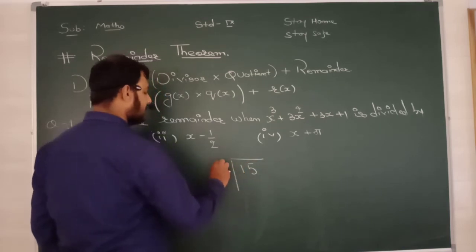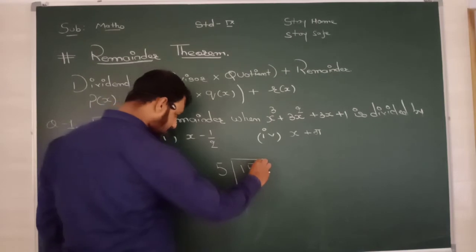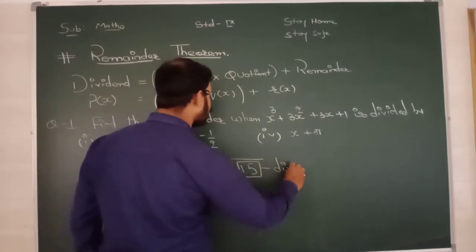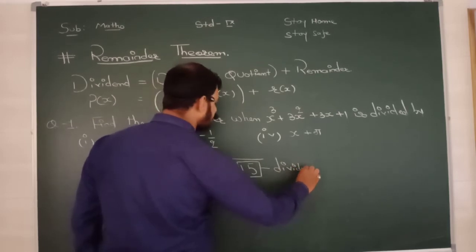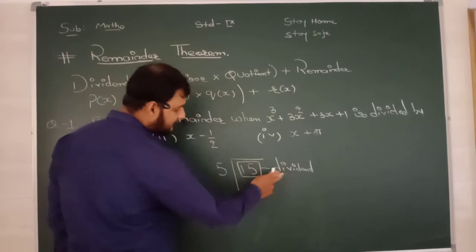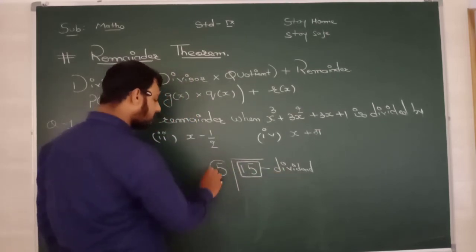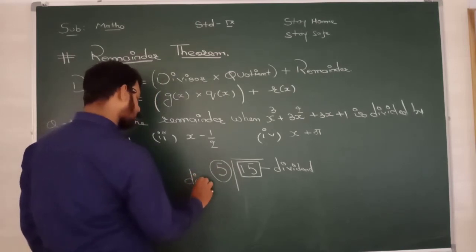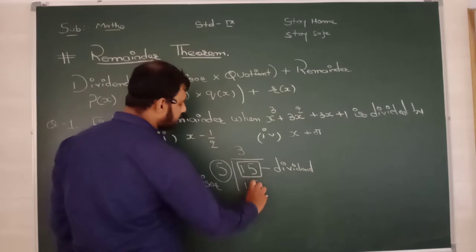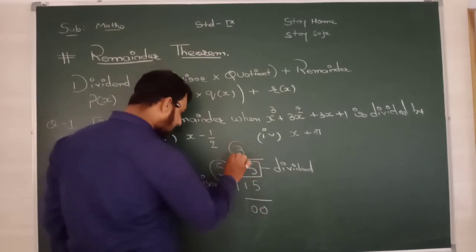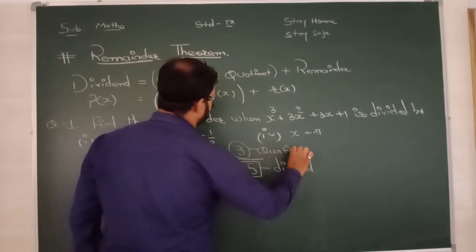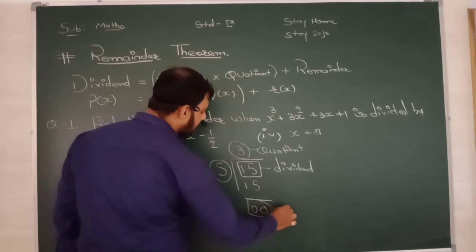Suppose 15 divided by 5. Dear students, dividend - जिसको हमें divide करना है - वो है हमारा dividend. We are dividing 15, so 15 is the dividend. 15 को हम 5 से divide कर रहे हैं, so यह है हमारा divisor. 15 threes are 5, threes are 15 - यहां पर जो आता है उसे बोलते हैं quotient. That is the quotient.